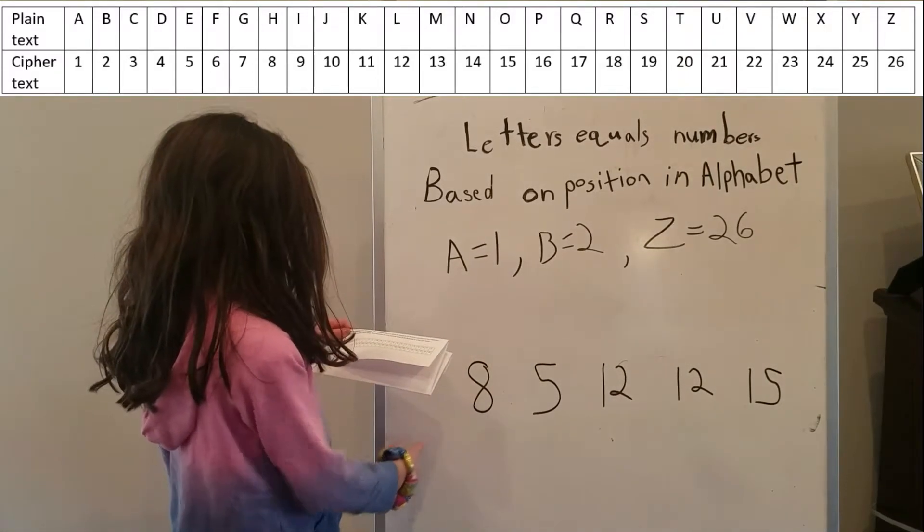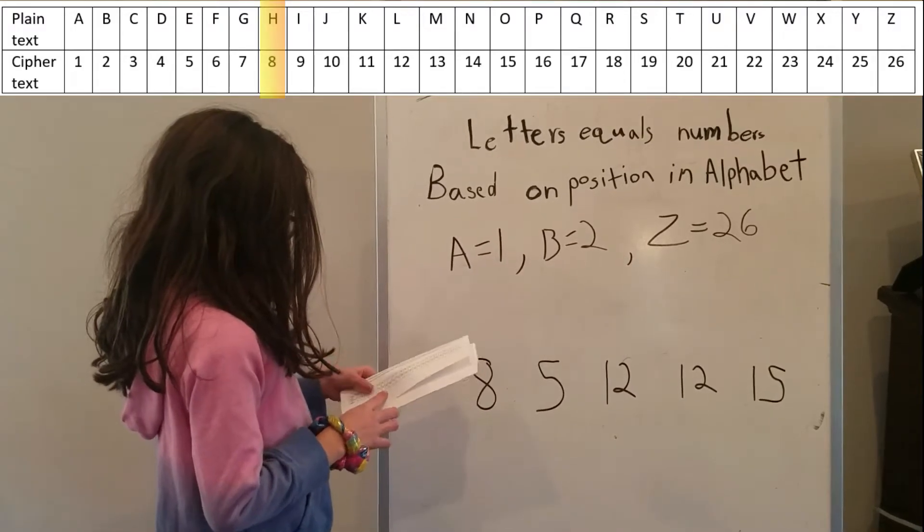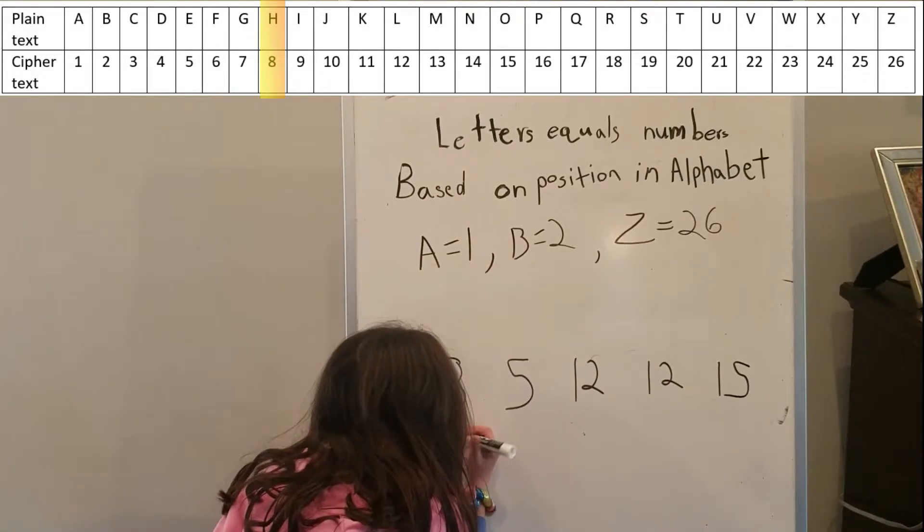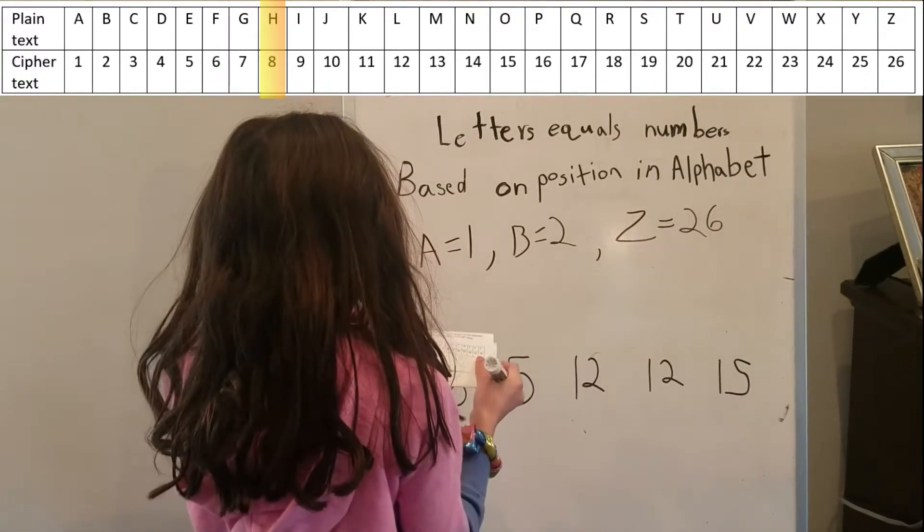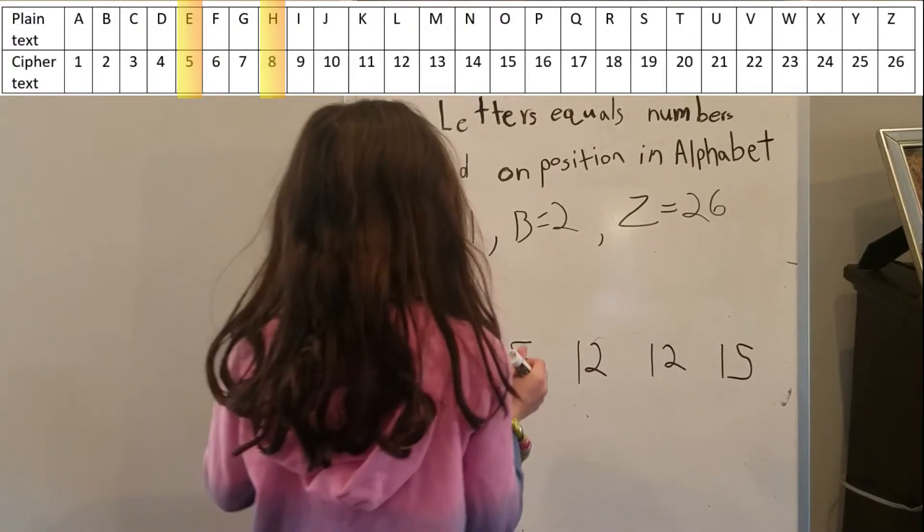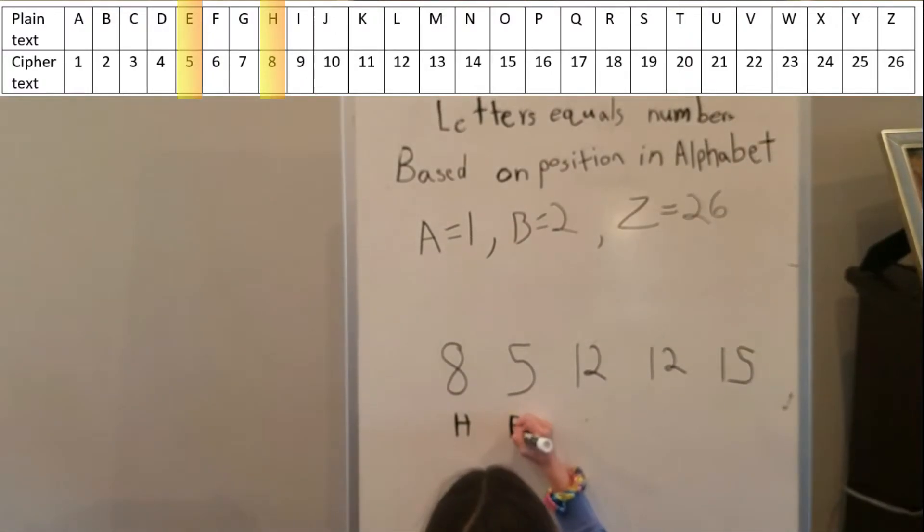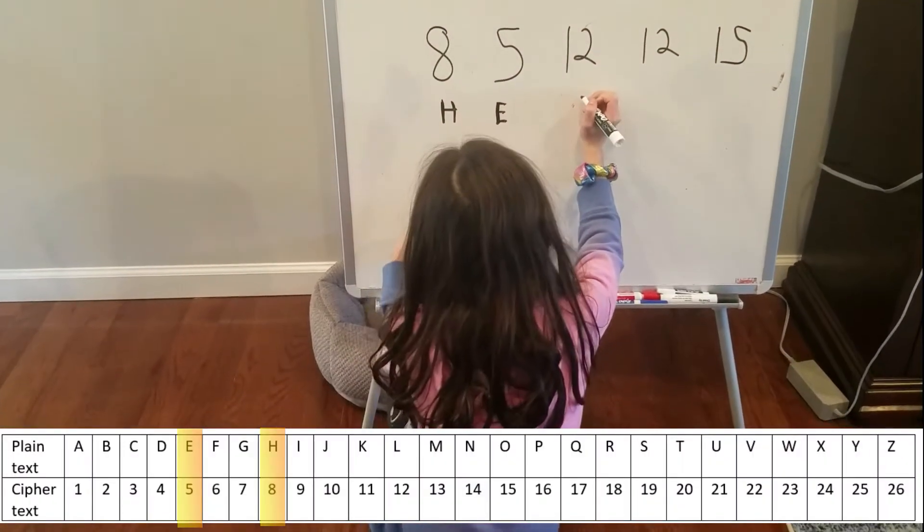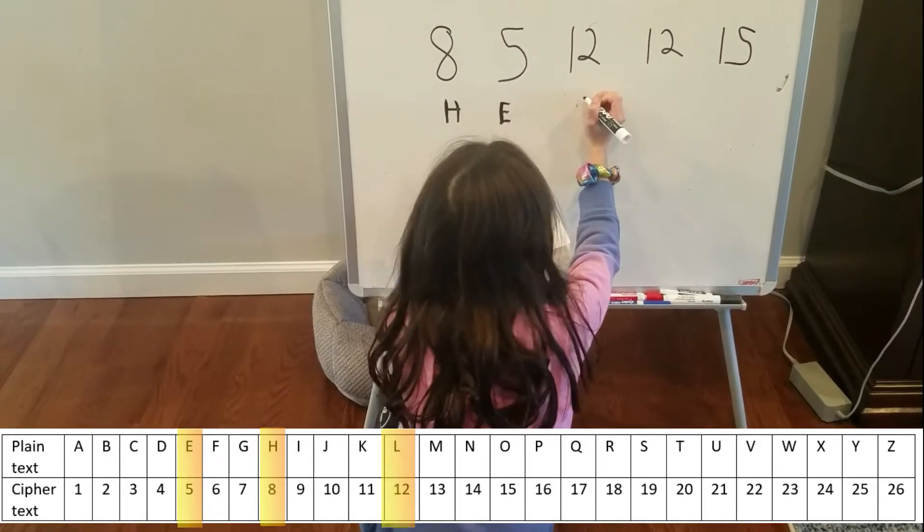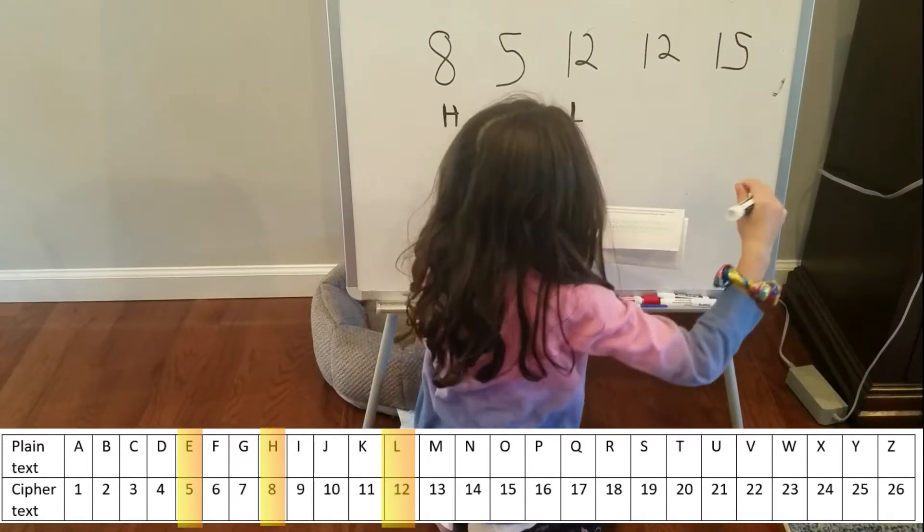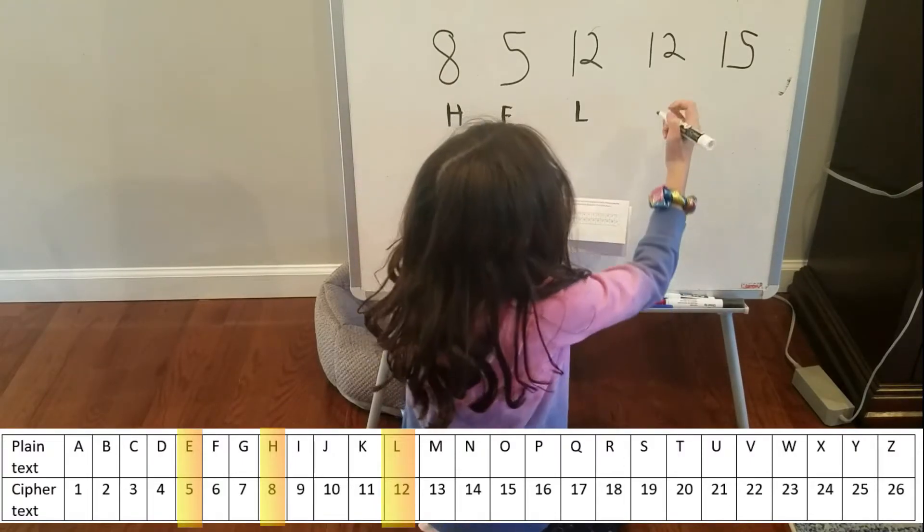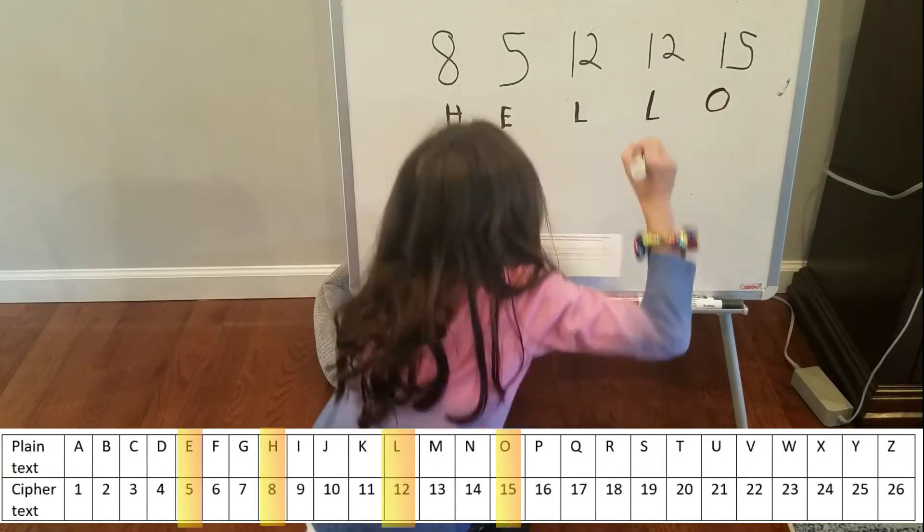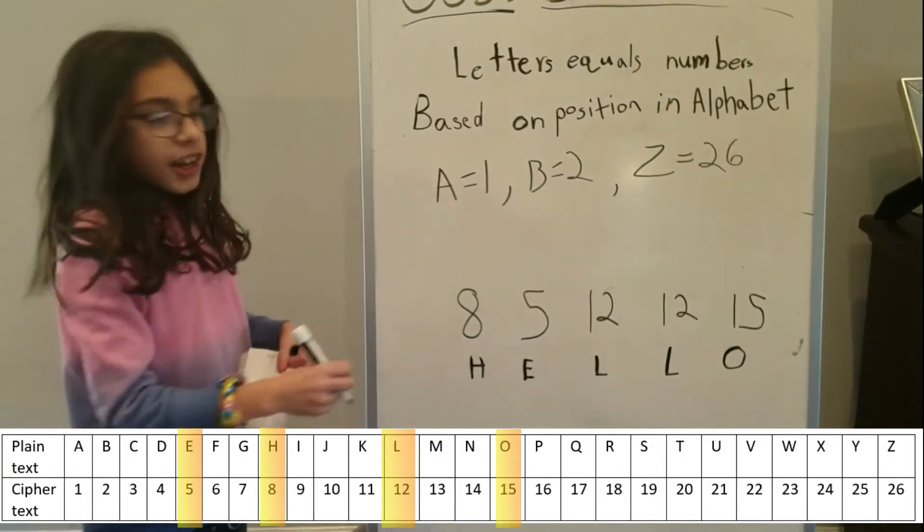So 8 is h. So we can write that down. 5 is e. 12 is l. What is this from? Oh wait, I know what it is. Another 12. And 15 is o. Hello. The answer is hello.